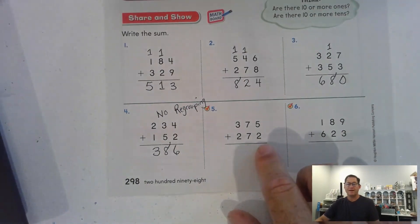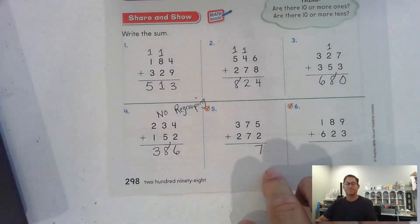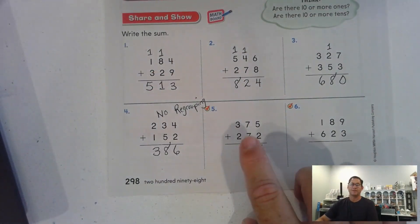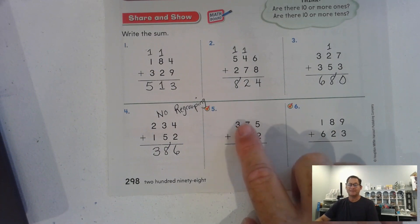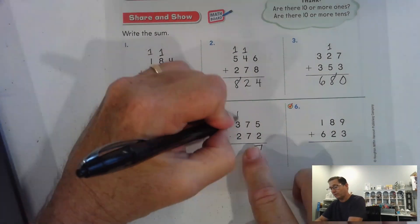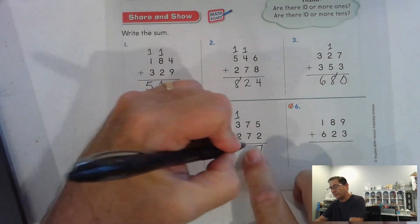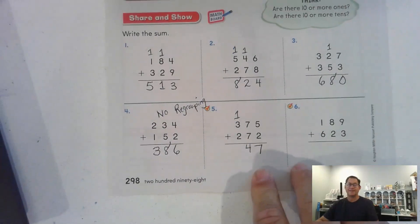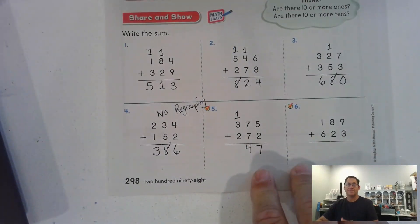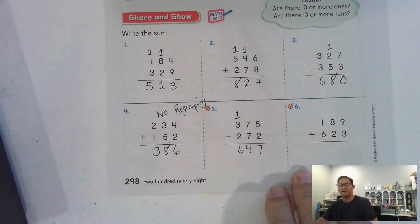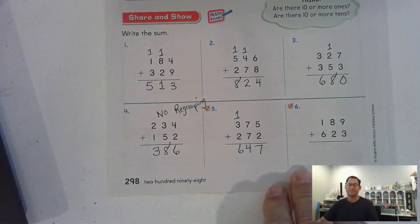Number five: five and two is seven — don't have to regroup the ones. But seven and seven tens is fourteen tens — we will regroup as one hundred and four tens. And in the hundreds, we have five, six hundred.